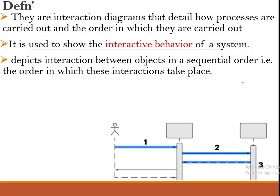A sequence diagram is an interaction diagram. Being an interaction diagram, it shows how processes or activities are carried out, and specifically the order in which those particular activities are carried out. In other words, it helps us to know the interactive behavior of a system that a given actor or user is interacting with.